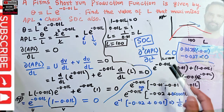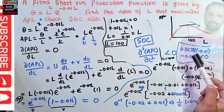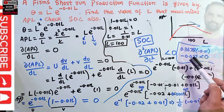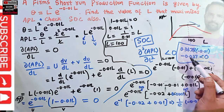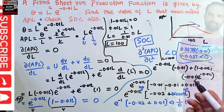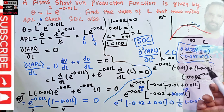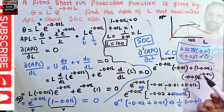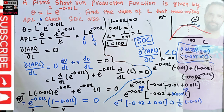So in summary: the first order condition was used to find the maximum, giving L equals 100 units of labor. The second order condition was used to ensure we have actually reached a maximum — since the second derivative is negative at L equals 100, we confirm this is indeed a maximum. I hope this video was clear. Thank you.